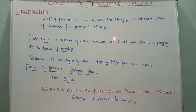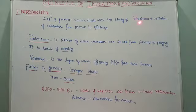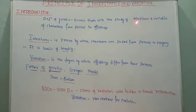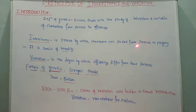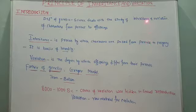Our offspring differ from each other and from ourselves — even we differ from our parents somewhere, though we are their offspring. That difference is related to variation. Inheritance means the transfer of characters from parents to the next generation. Those characters may be behavioral, external, genetical, or even disease-related. That process of passing characters from parents to offspring, generation after generation, is called inheritance.